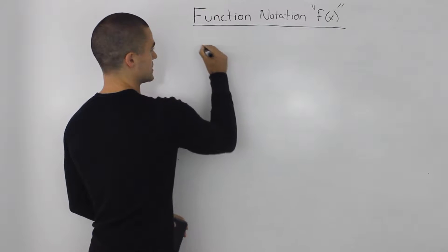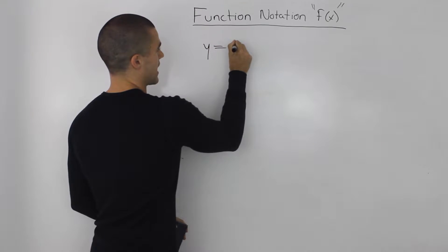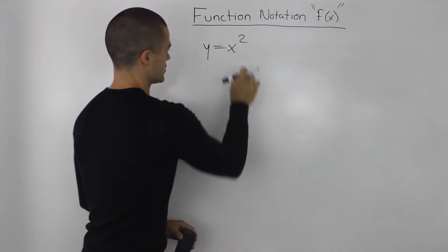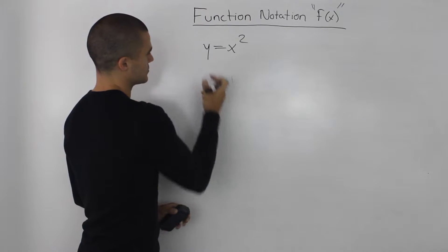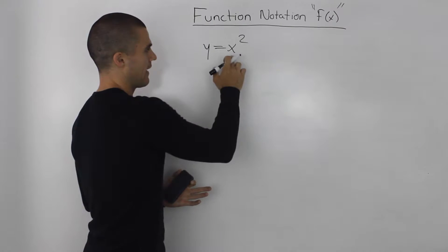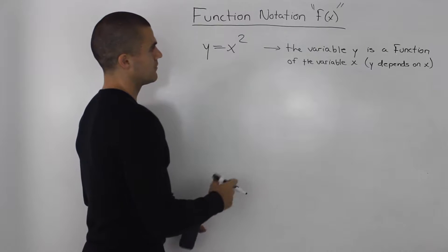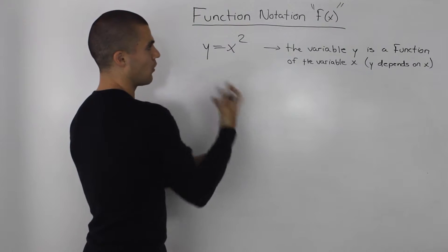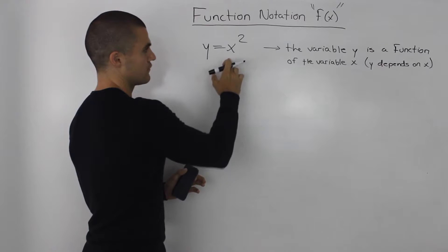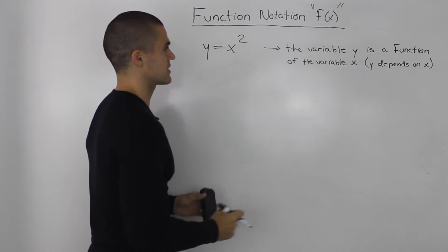So for example if we take the function y equals x squared, just a normal parabola, the y represents the dependent variable and the x represents the independent variable. And all that basically means is that the variable y is a function of the variable x or y depends on x.